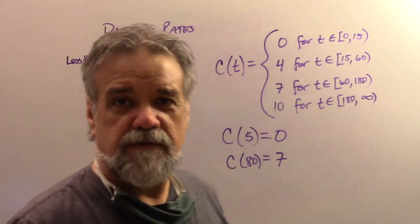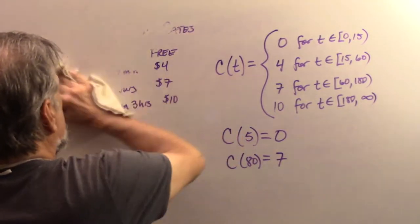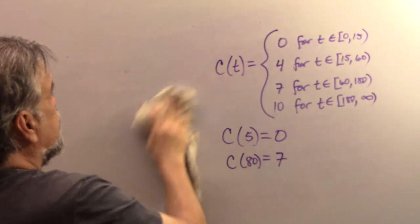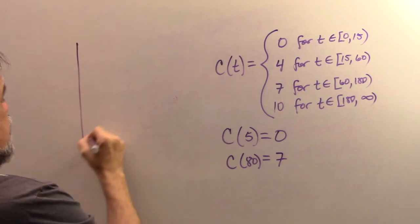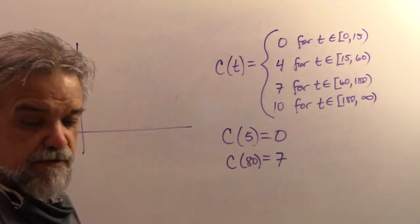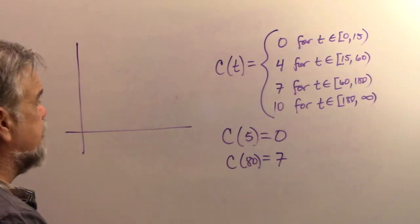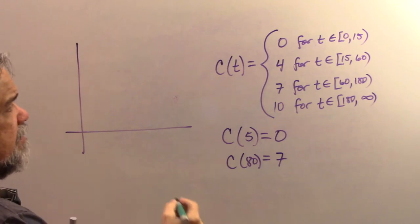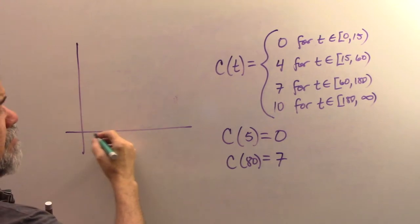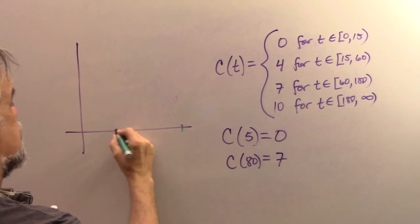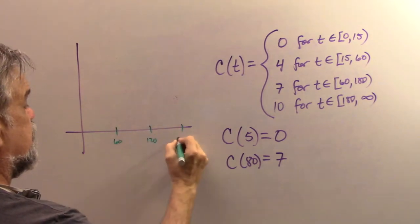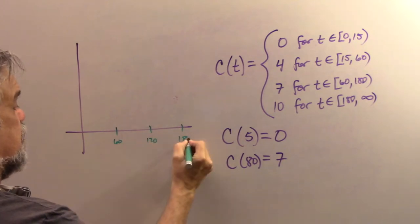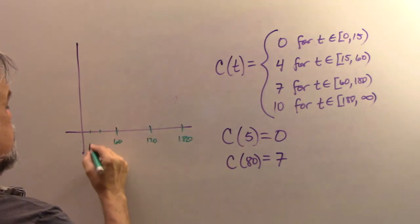Now, what about graphing? Well, it's kind of what you would expect it to be. This is all in the first quadrant. So I'm just going to draw my axes like that. I would say, let's see, I'm going to go up to 180. So let's have this be 60, 120, 180. And that means that's going to be 15 right there.